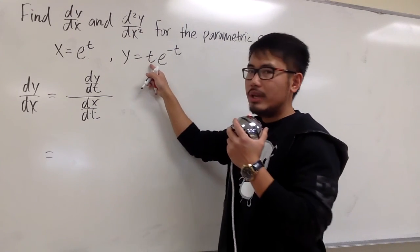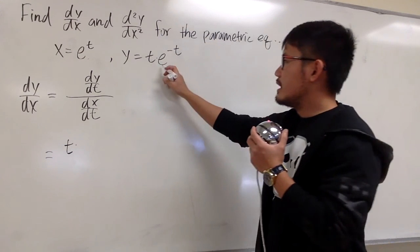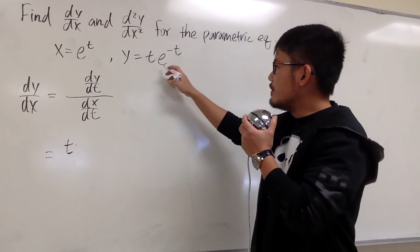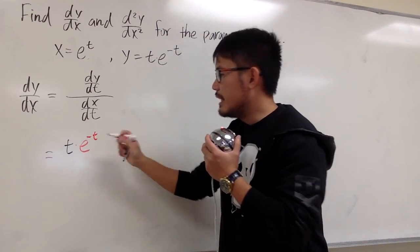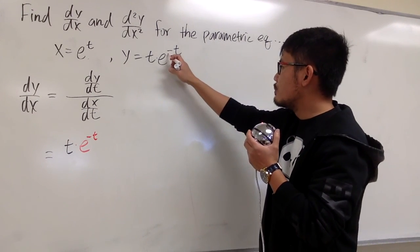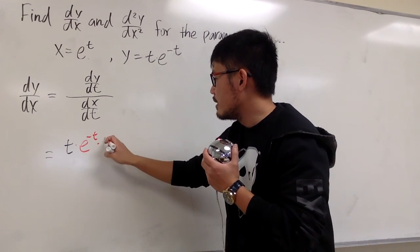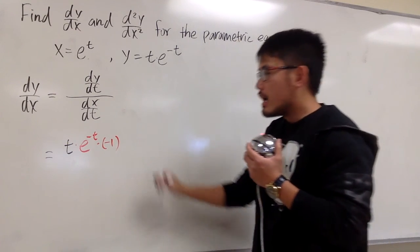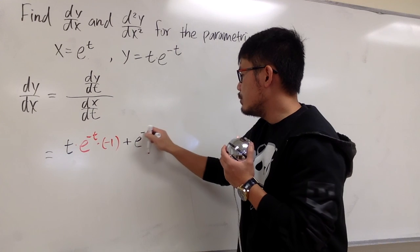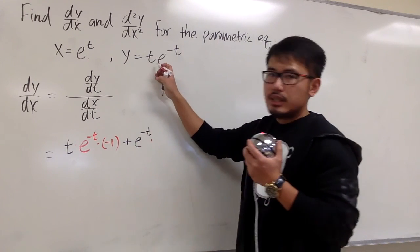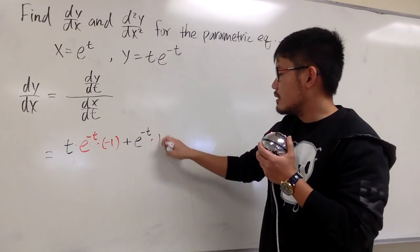The product rule says we keep the first function, which is t, and multiply by the derivative of the second. The derivative of e to the negative t repeats as e to the negative t, but the chain rule says we multiply by the derivative of negative t, which is negative 1. Then we add: we keep the second function, e to the negative t, and multiply by the derivative of the first, which is 1.